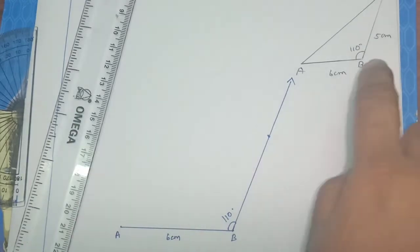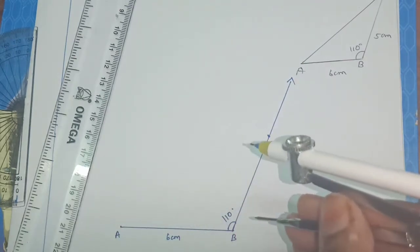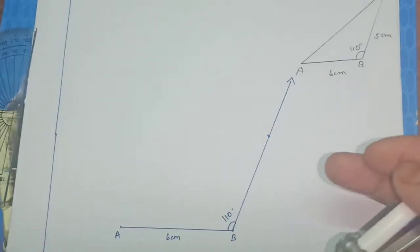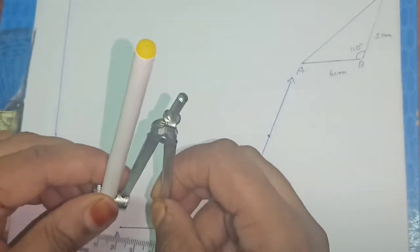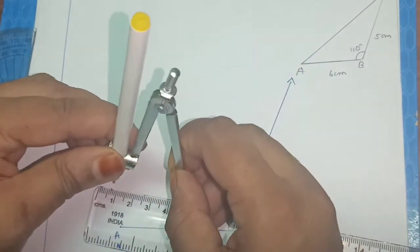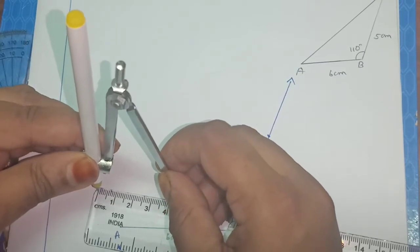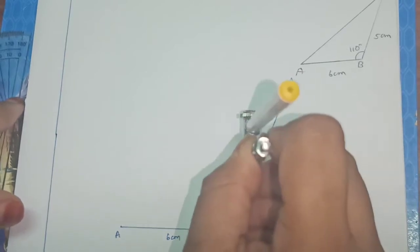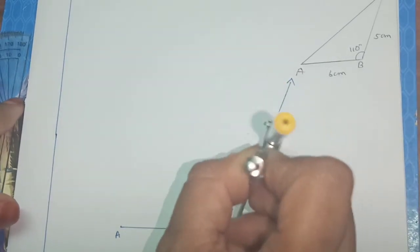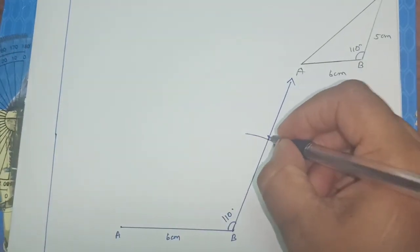The next thing is we have to draw BC 5 cm on the same ray we have to cut 5 cm. So measure 5 cm in your ruler. And from B, you have to cut. So this is our C.